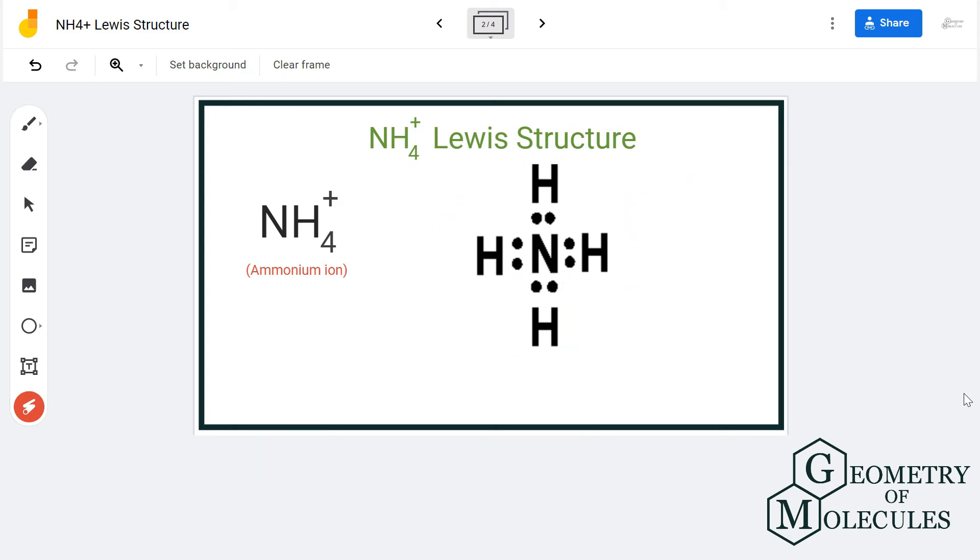This is the Lewis structure for NH4+, but the only thing you need to add are these brackets, which show us that this is an ion. Add a bracket and add a plus sign over here, which depicts that it has a positive charge because it is giving away an electron. This is how you write down the Lewis structure for an ion by putting brackets and putting a charge.